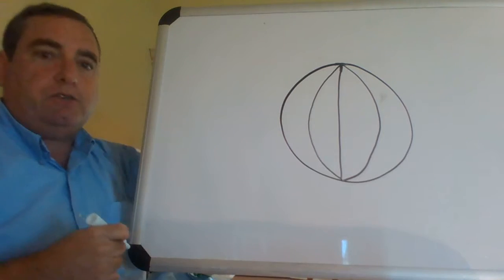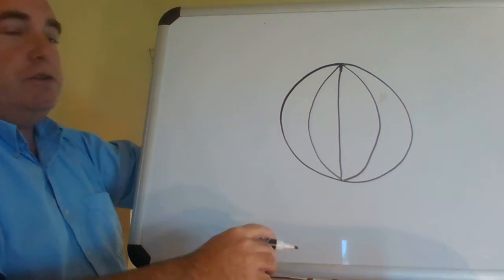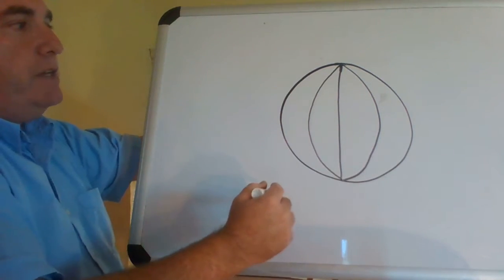Now, right there, you've got a beach ball. You can stop right there. You can draw a beach ball. You can also use it as a basketball. We're going to turn it into a jack-o'-lantern, however.